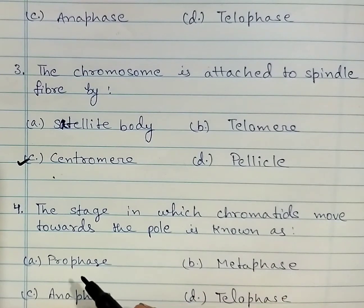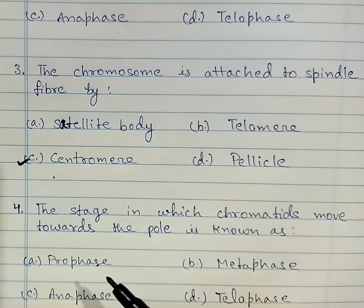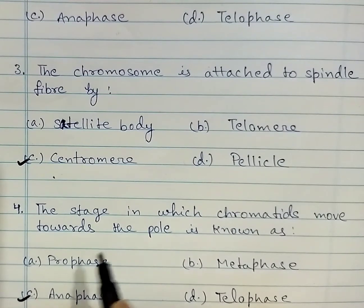A: prophase, B: metaphase, C: anaphase, D: telophase. Correct answer is anaphase. During anaphase, chromatids move towards the pole.